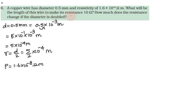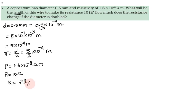What will be the length of this wire to make the resistance 10 ohm? Resistance of this wire is 10 ohm. First, we need to find the length of this wire. The resistance formula is rho l divided by A, so we need to find the length.